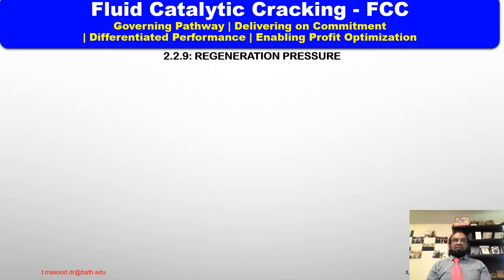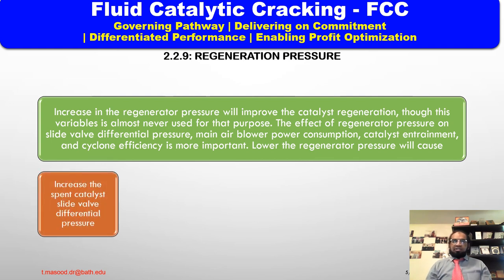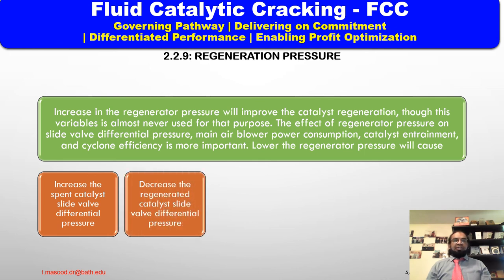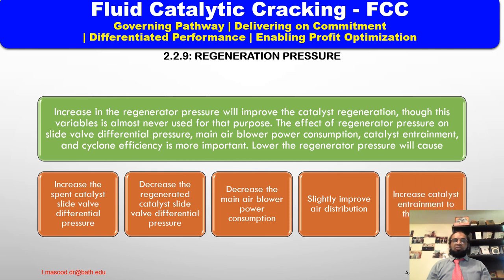Instance nine is regenerator pressure. An increase in regenerator pressure will improve catalyst regeneration, though this variable is almost never used for this purpose. The effect of regenerator pressure on slide valve differential pressure, main air blower power consumption, catalyst entrainment, and cyclone efficiency is more important. Lowering the regenerator pressure will: (1) increase the spent catalyst slide valve differential pressure, (2) decrease the regenerated catalyst slide valve differential pressure, (3) decrease the main air blower power consumption, (4) slightly improve air distribution, and (5) increase catalyst entrainment to the cyclones.